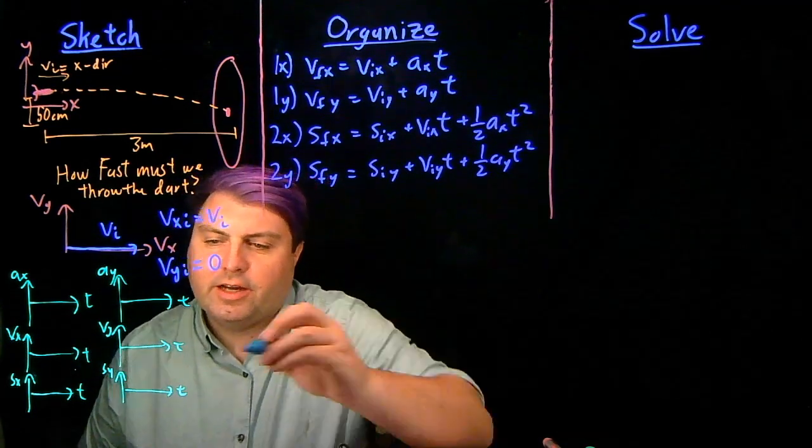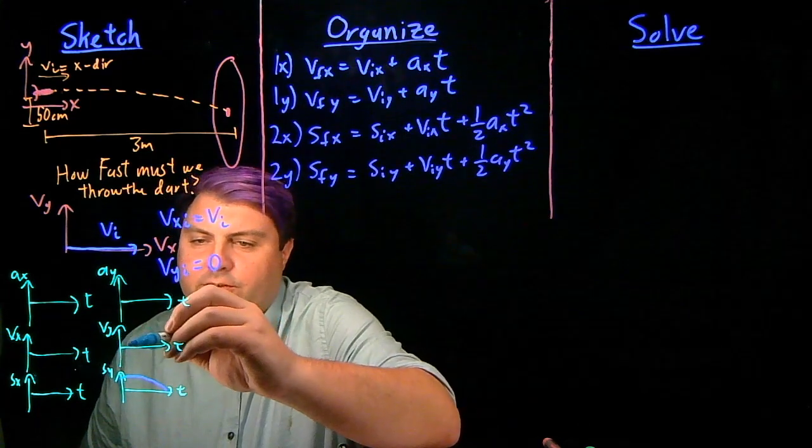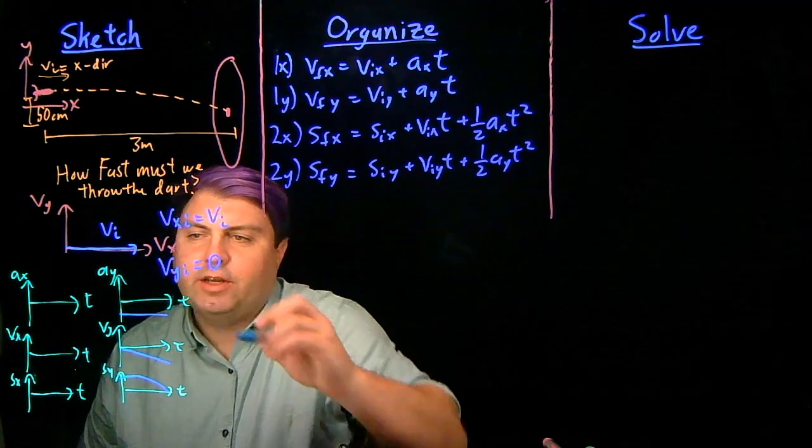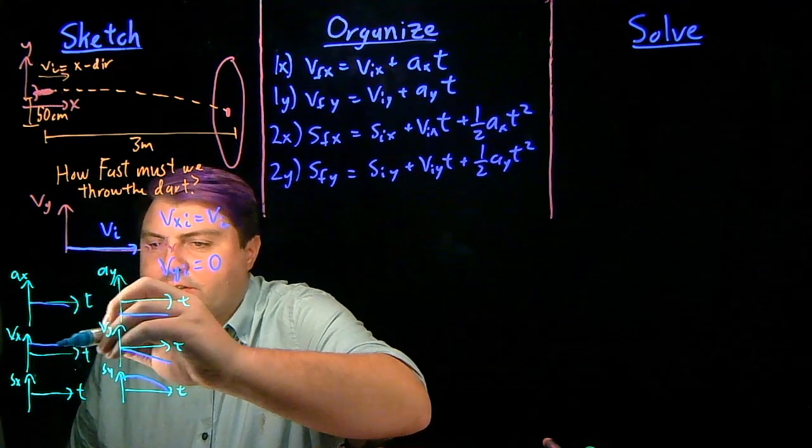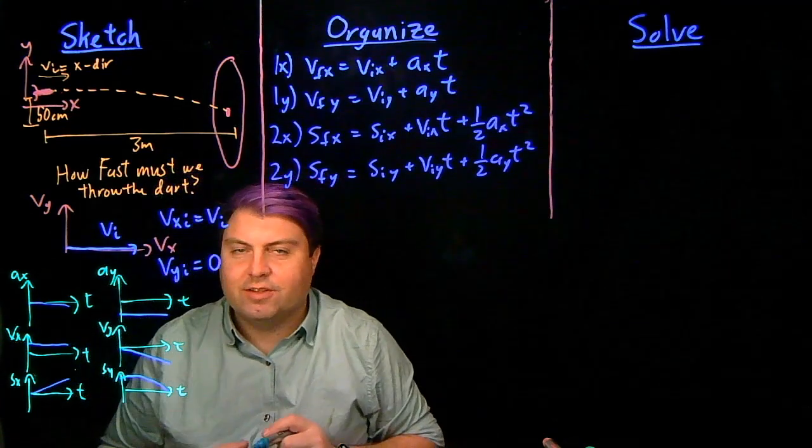So if we do this, then our sy versus time graph is going to start and go down, our vy is going to start horizontally and then go down, and our ay is going to be a negative constant. Our ax is going to be zero, our vx is going to be a positive constant, and our sx is going to travel in this way.